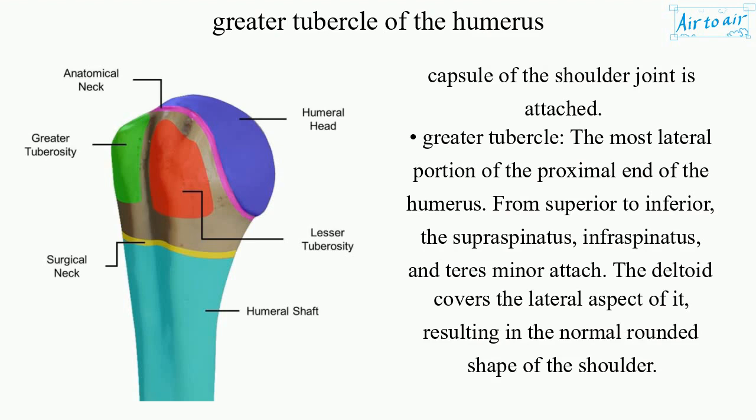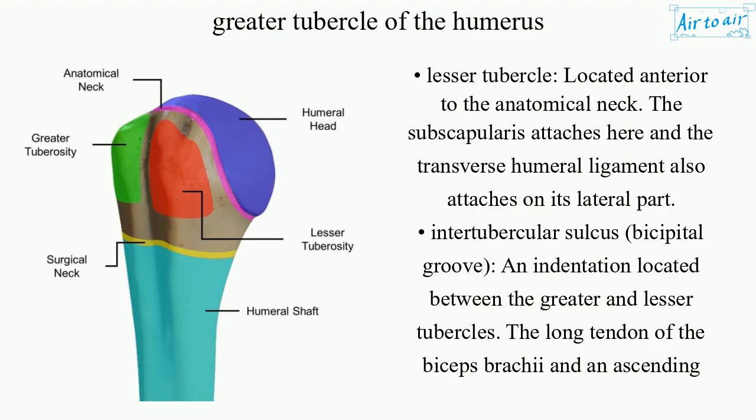The greater tubercle is the most lateral portion of the proximal end of the humerus. From superior to inferior, the supraspinatus, infraspinatus, and teres minor attach here. The deltoid covers its lateral aspect, resulting in the normal rounded shape of the shoulder. The lesser tubercle is located anterior to the anatomical neck, where the subscapularis attaches.